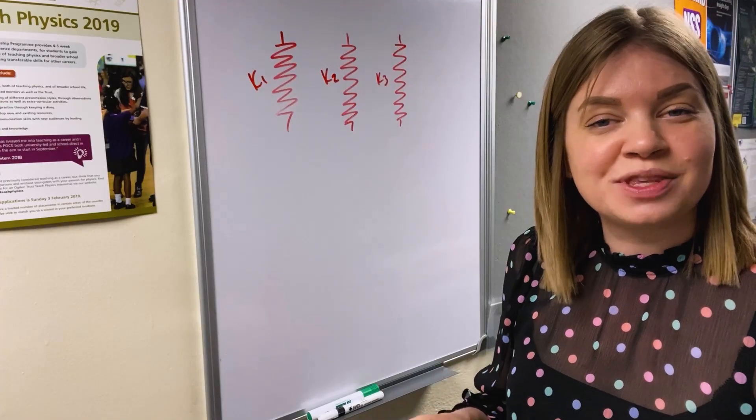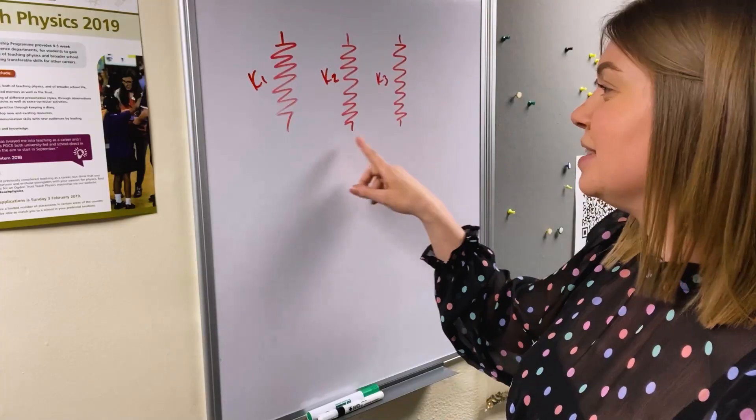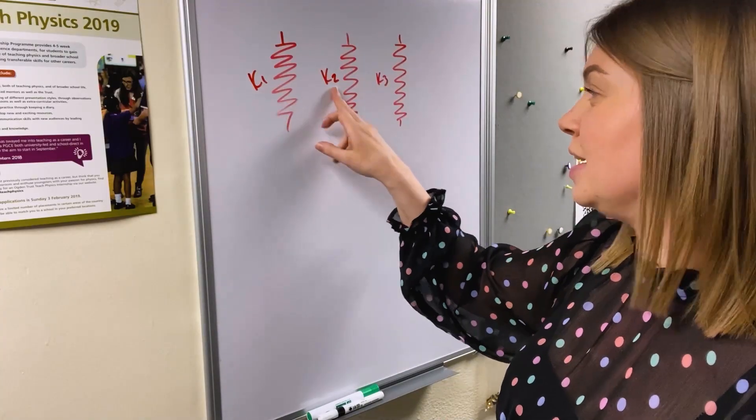So let's start with springs in parallel. Here we've got three different springs each with spring constants k1, k2 and k3 respectively.